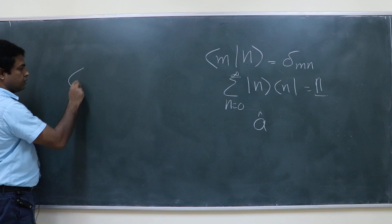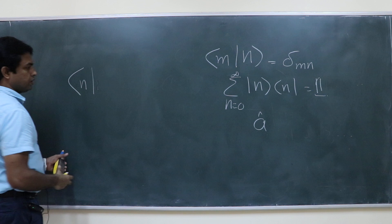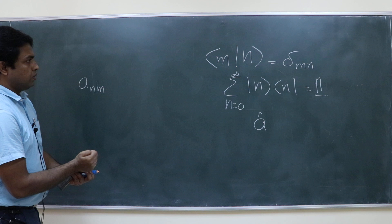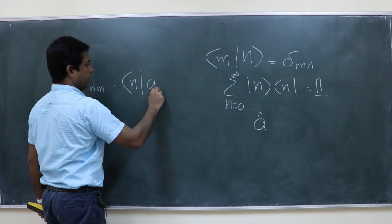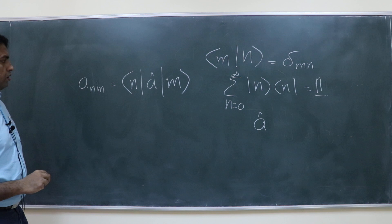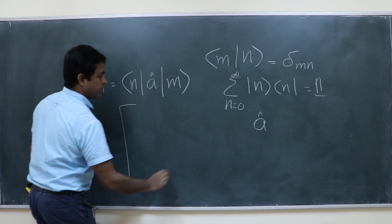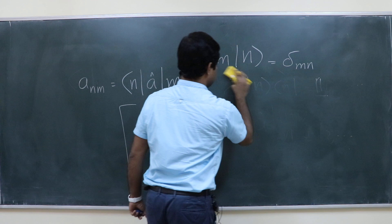What is the n-mth element of that operator in ket n basis? So that you can write as a_nm. What is a_nm? It is equal to bra n, operator a, ket m. Here n and m can each take values from 0 to infinity. If you write this down, it is an infinite dimensional matrix.